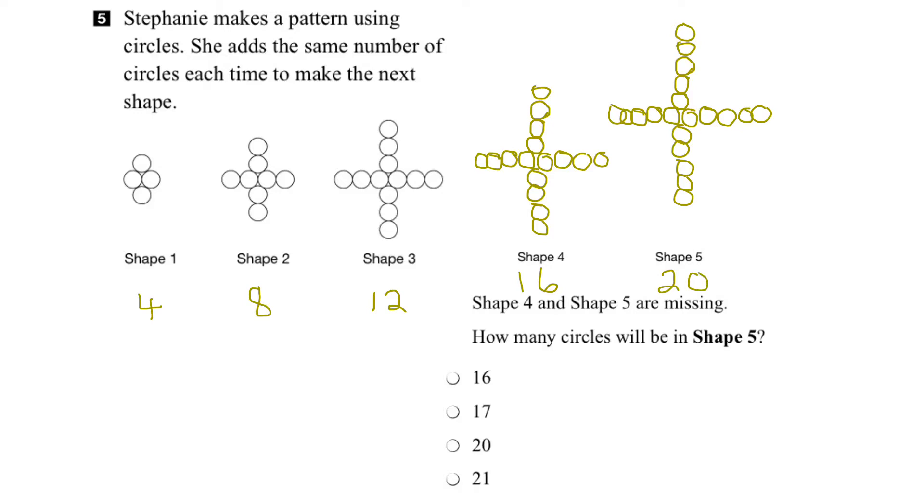Let's double check, let's count. So we've got 1, 2, 3, 4, 5, 6, 7, 8, 9, 10, 11, 12, 13, 14, 15, 16, 17, 18, 19, 20 circles.